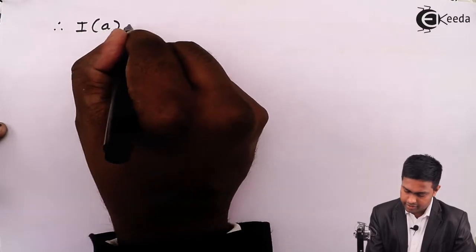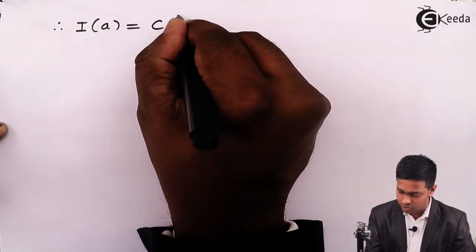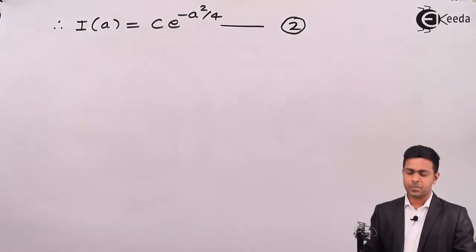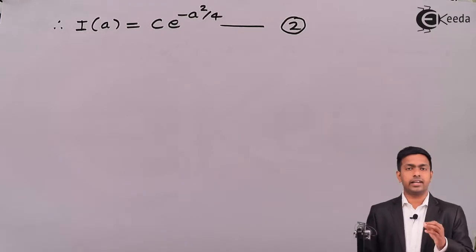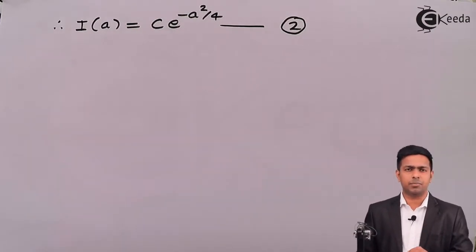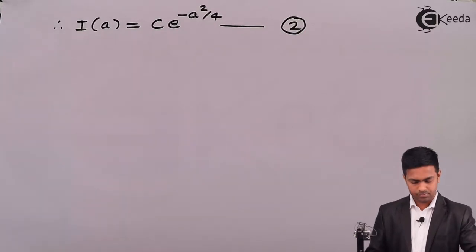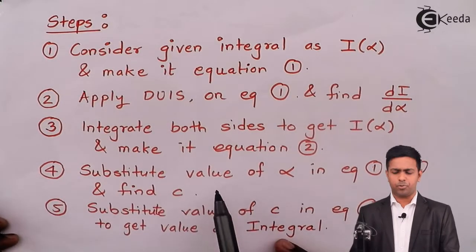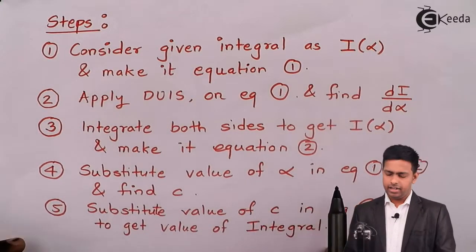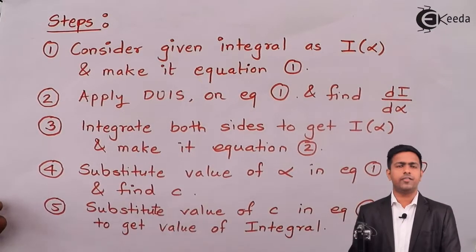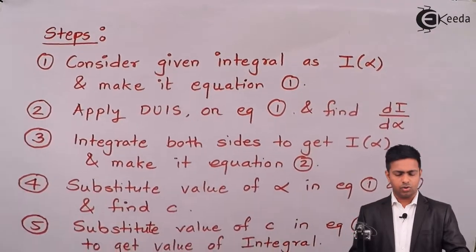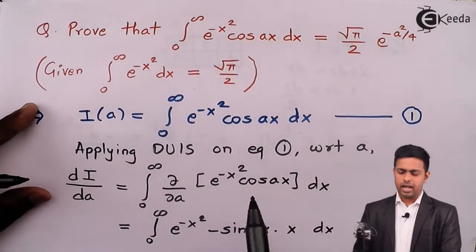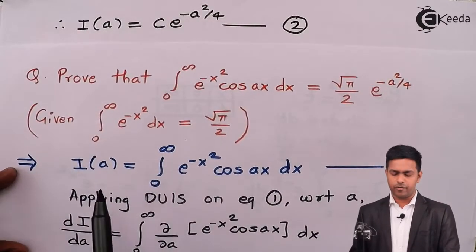I(a) = C · e^(-a²/4) is equation 2. This completes step 3. Moving to step 4: we substitute the appropriate value of a in equations 1 and 2 to find C. We put a = 0 in both equations to get a finite integral and a finite value of C.